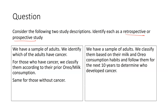Welcome back. The first description says: we have a sample of adults, we identify which of the adults have cancer, and for those who have cancer we classify them according to their prior Oreo and milk consumption — same for those without. Cancer is our response variable. We identify people who have cancer and then look back to classify them based on prior Oreo and milk consumption. Because we identify the response first and then look back to classify based on the explanatory variable, this is a retrospective study.